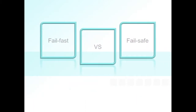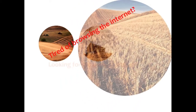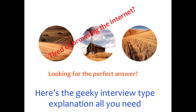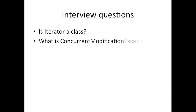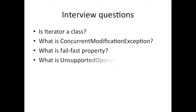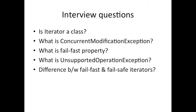Hey guys, welcome to my channel. Today our topic is fail-fast and fail-safe iterators. Let's have a look at a couple of interview questions: Is iterator a class? What is concurrent modification exception? What is the fail-fast property? What is unsupported operation exception? And what is the difference between fail-fast and fail-safe iterators?